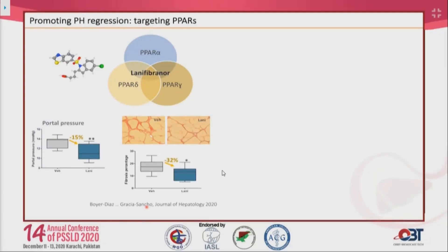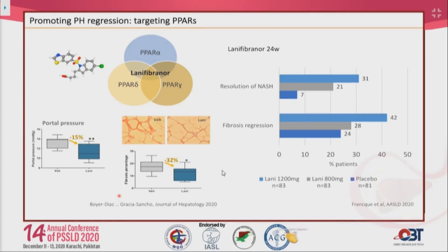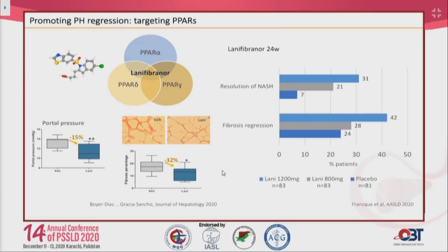This preclinical study has been partially validated in a randomized controlled trial presented at an American meeting: patients with NASH receiving 24 weeks of lanifibranor at two dosing levels showed improvement and even resolution of NASH compared to placebo. Patients receiving the high dose also showed regression in fibrosis, suggesting lanifibranor could be a novel therapeutic agent to promote fibrosis regression and improvement in portal hypertension.